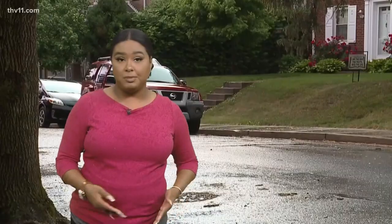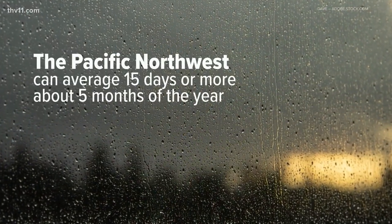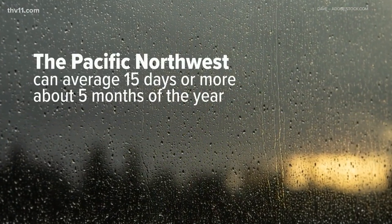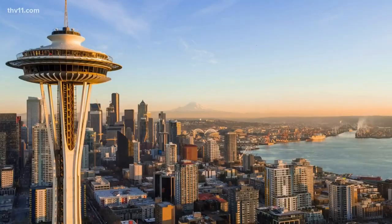Statistically, one might assume that if we see measured precipitation earlier in the month, the chance of seeing more recorded rainy days may be higher. But the amount of rainy days can vary based on location, climate, and even season. In wet regions like the Pacific Northwest, they can average 15 days or more of rain about five months out of the year.